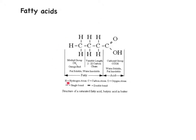This diagram shows the general structure of a fatty acid. You have the carboxylic acid group, the hydrocarbon chain, and then the methyl group which terminates the hydrocarbon chain. This section here can be of variable length, while the carboxylic acid and methyl group sections are fixed.